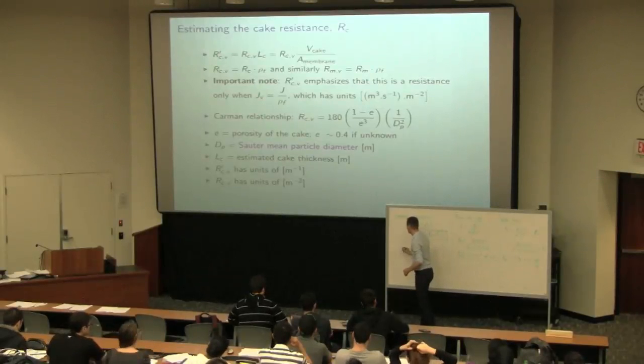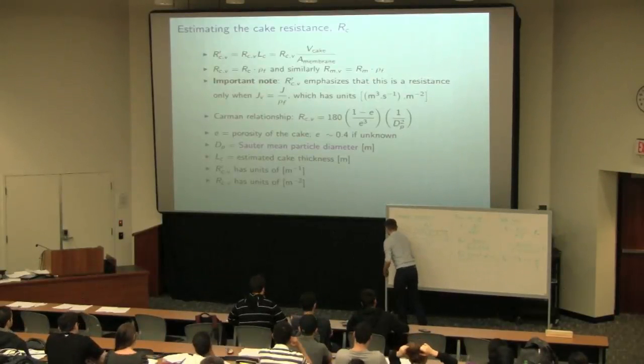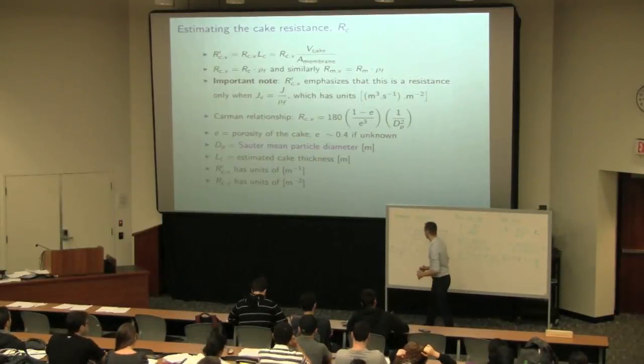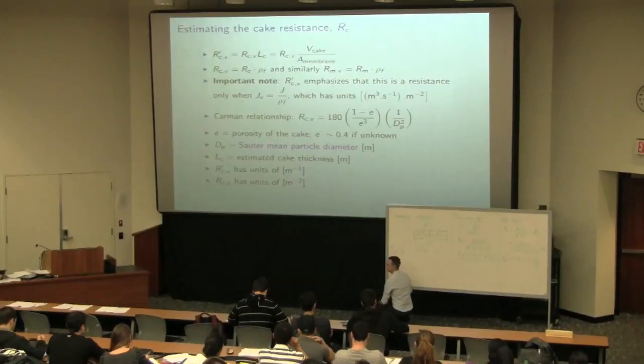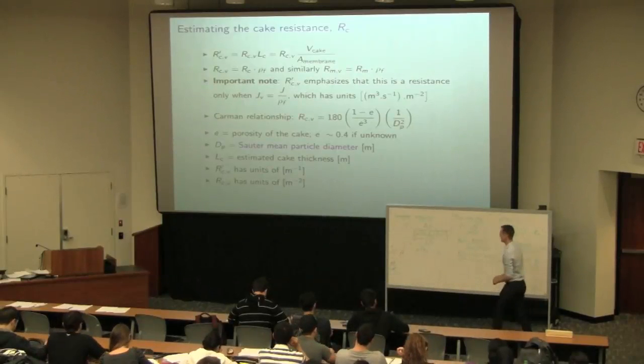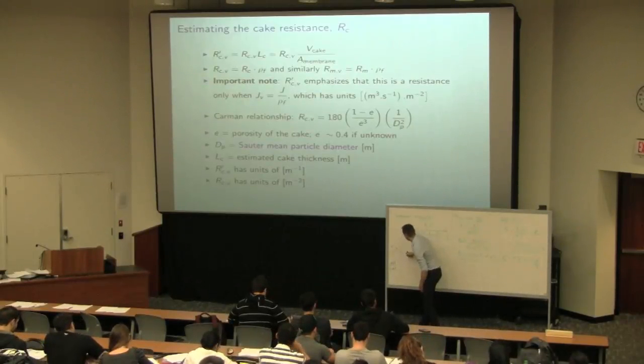So this is kilograms per second per meter squared, divided by kilograms per meters cubed, we're going to get what we call J subscript V, our flux in volumetric form. In other words, the units there would be meters cubed per second per meter squared. Please do not simplify that. People sometimes simplify that to meters per second. It's pretty useless doing that. So JV then is J divided by rho.